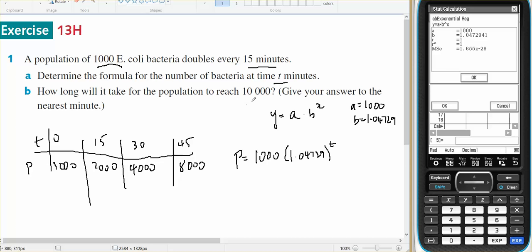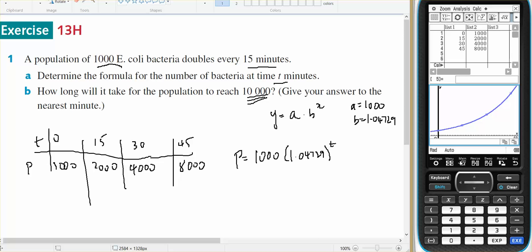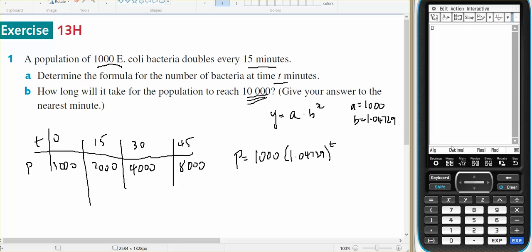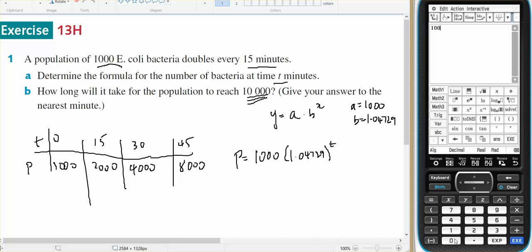How long will it take for the population to reach 10,000? So I'm now going to go over into main. And I'm going to enter 1,000 times 1.04729 to the power of X. Beautiful. And I'm going to make that equal what I need to get, 10,000 and solve for X.